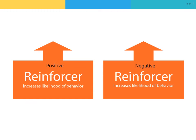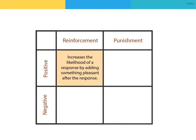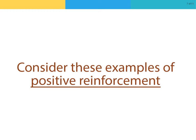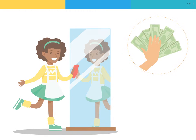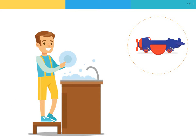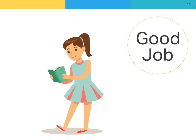Skinner also used the terms positive and negative to refer to whether a reinforcement was added or subtracted. Positive reinforcement increases the likelihood of a response by adding something pleasant after the response. Examples include: a little girl receiving an allowance for doing her chores, a mother buying her son a toy for doing the dishes, and a father giving his daughter verbal praise for completing her homework.